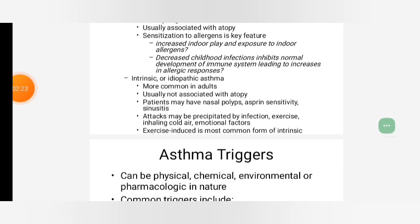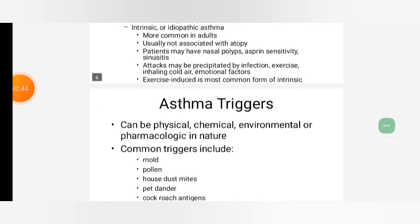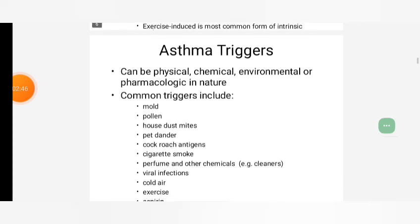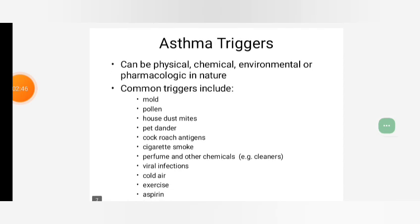Intrinsic or idiopathic Asthma is more common in adults and usually not associated with atopy. Patients may have nasal polyps, aspirin sensitivity, sinusitis. Attacks may be precipitated by infection, inhalation, cold air, or emotional factors. Exercise-induced asthma is the most common form of intrinsic Asthma triggers.